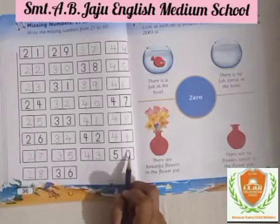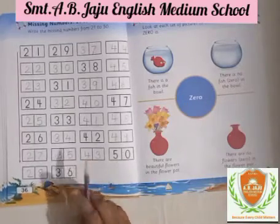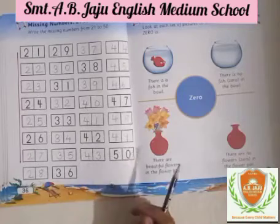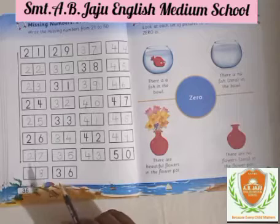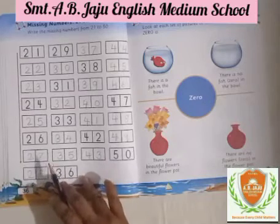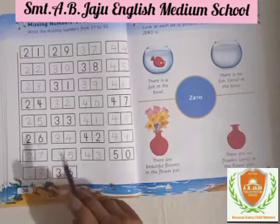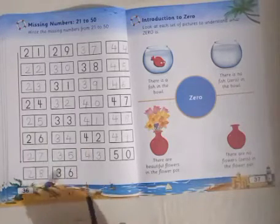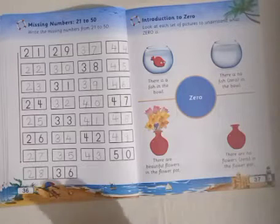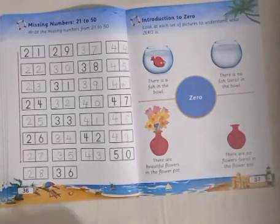Like this, you have to complete missing numbers 21 to 50. Read the numbers loudly, keep your finger or pencil or scale — whatever you have — and read the numbers aloud. Write the missing numbers in the proper box. Click the photo and send it to the group. We will meet in the next video. Till then, bye bye students!